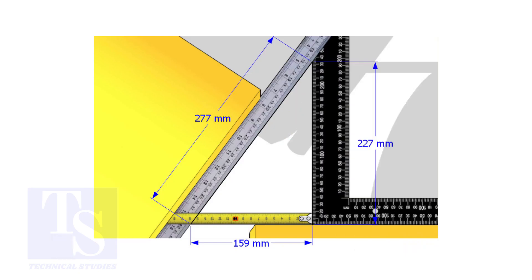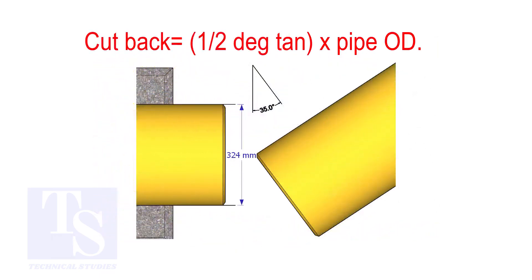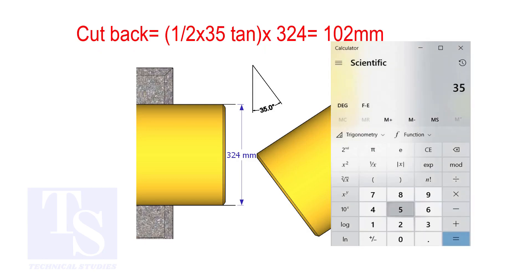How to calculate the cutback of a single cut miter. When it is a single cut, the cutback is half degree tan multiplied by the OD of the pipe. The answer is 102 millimeters.